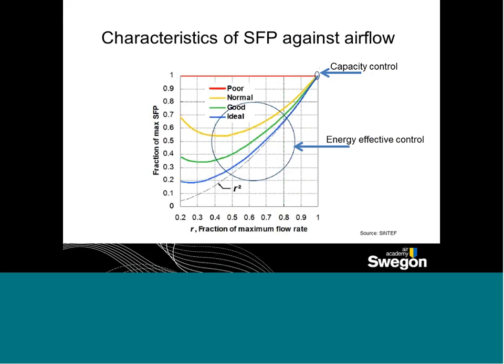If we look at the characteristics of specific fan power against airflow, the red line at the top characterizes a constant air volume system. As we go through yellow, green, and then towards the blue line, you see the different degrees of how you're controlling the system, with the optimal being towards the lower blue line. That's where you have the most ability to save energy while still getting the maximum benefit.